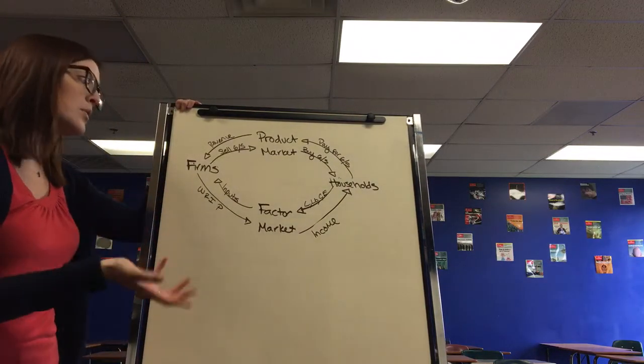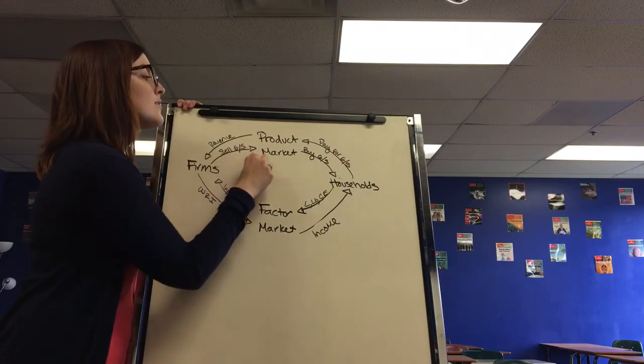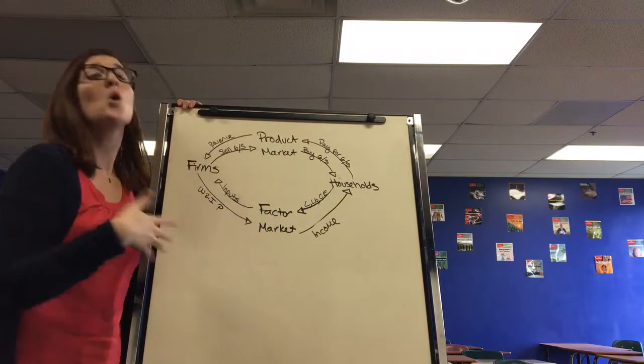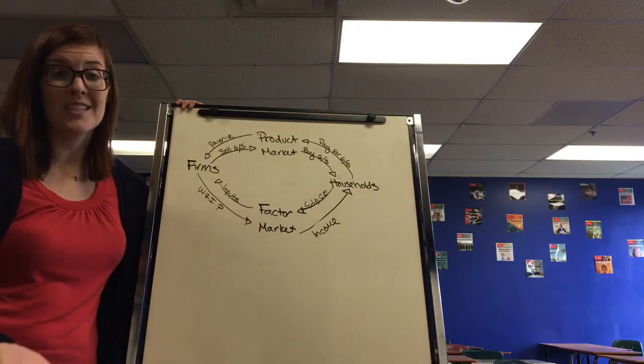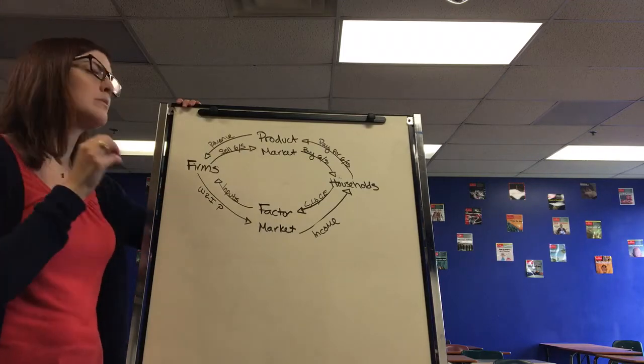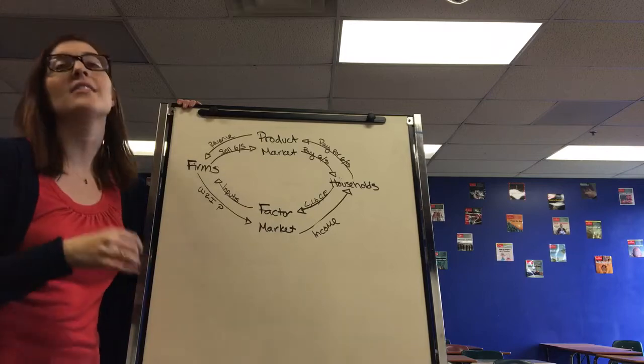The product market is pretty simple. Firms are the sellers in the product market - they sell their goods and services and the households buy them. In return, the households pay for those goods and services which creates revenue for the firms. I keep it straight conceptually by just remembering firms are the sellers in the product market, households are the sellers in the factor market.